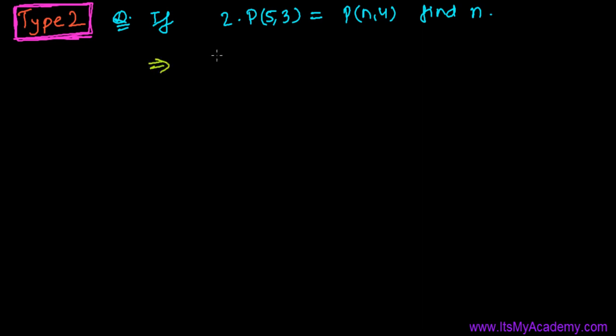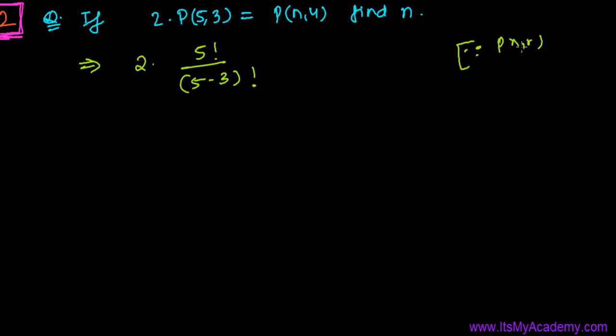So you just proceed, it's 2 and put the value of P(5,3), that uses the permutation formula, that is 5 factorial divided by 5 minus 3 factorial. Which formula I'm using? I'm using the formula P(n,r) equals n factorial divided by n minus r factorial. I just use this formula.